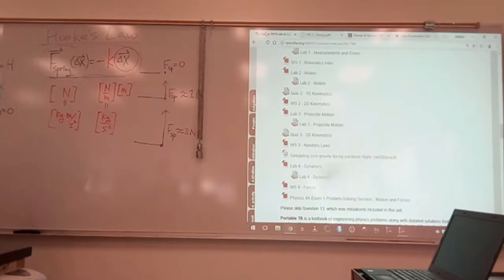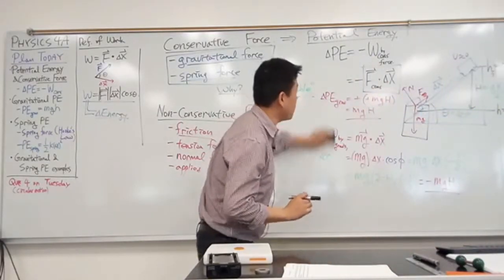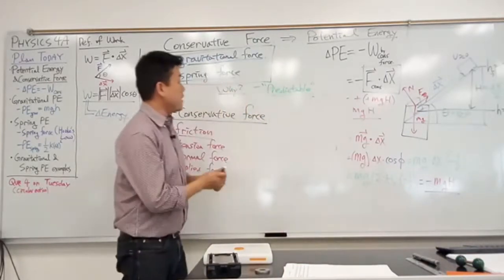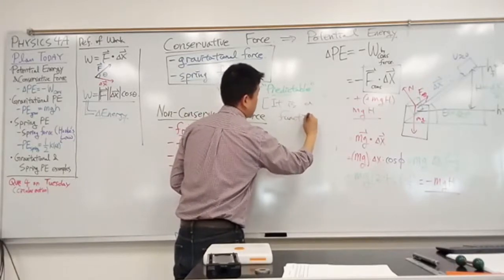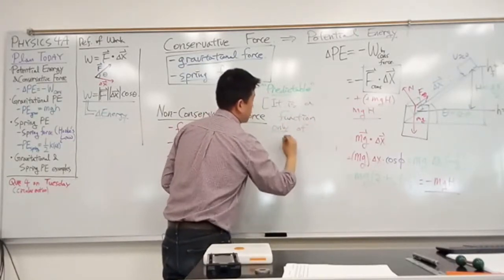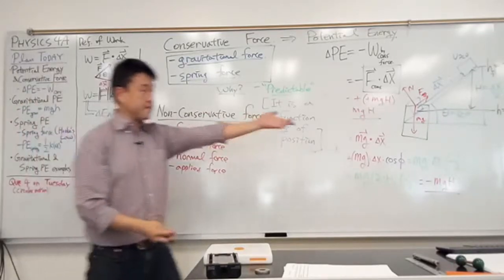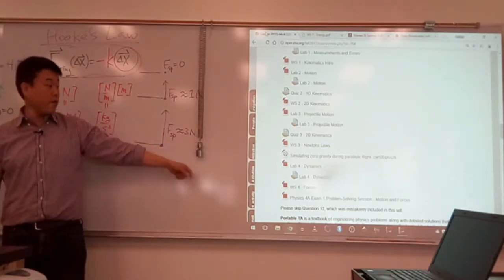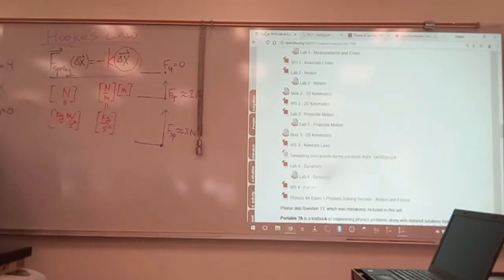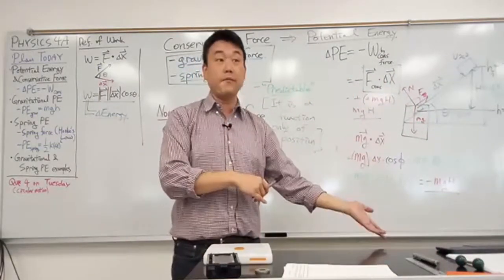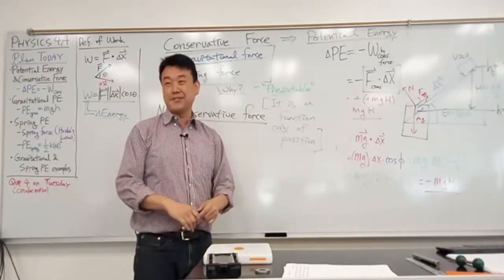I want to make this statement more precise. Conservative force is predictable in this sense — and this is the description you would find in the textbook — it is a function only of position. When the mass is at a particular position, you don't have to know anything else to know what the spring force is, whether it's moving downward, upward, or not at all. The amount of spring force only depends on position. That was actually true with gravity too — gravity is technically a function only of position; it just happened to be a constant function.